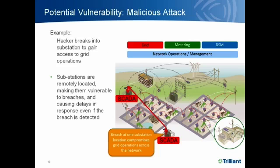This diagram shows an example of a malicious attack on the grid. Distribution substations are remotely deployed, making them vulnerable to physical attacks. If one substation was infiltrated, other substations could then be compromised over the network. There are obviously many different potential quality-of-service vulnerabilities and security compromises in a smart grid network, including some that haven't even been thought of yet. These examples are not meant to cover all possibilities, but simply illustrate a few types.